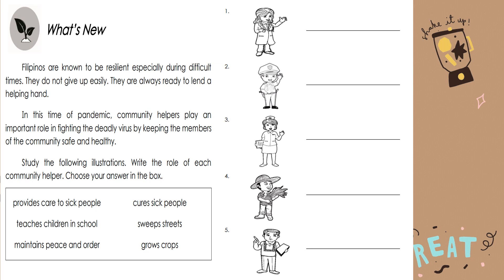Here are the choices: Provides care to sick people. Teaches children in school. Maintains peace and order. Cures sick people. Sweeps streets. Grows crops.